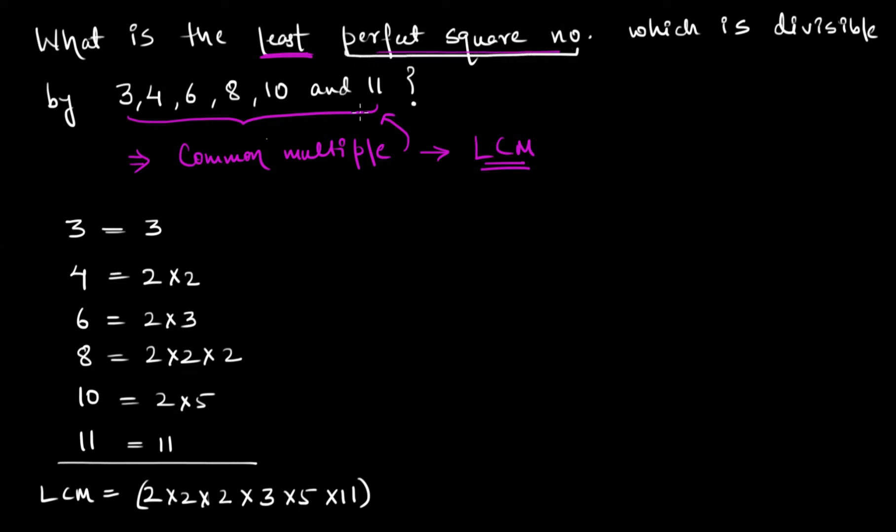We are talking about a number that is a perfect square as well. A perfect square number has a unique characteristic that all its prime factors are present in even numbers.